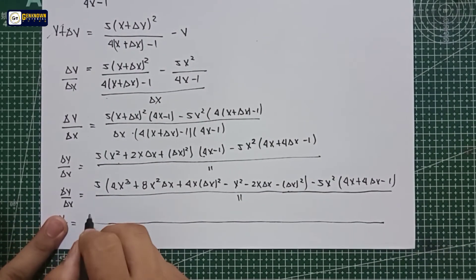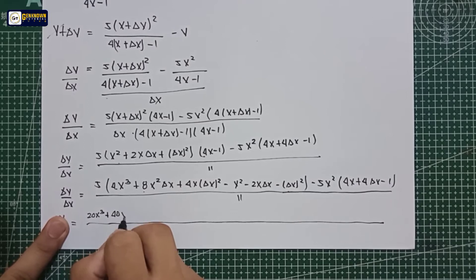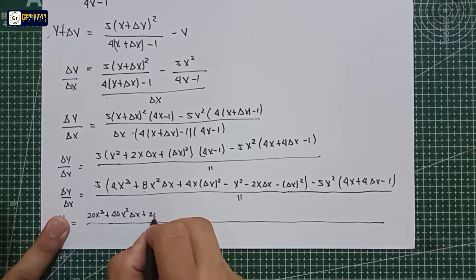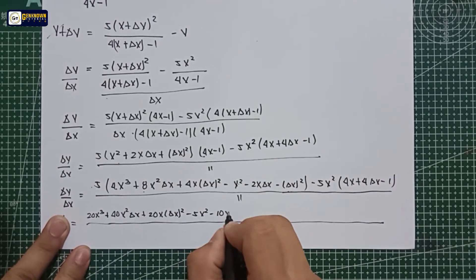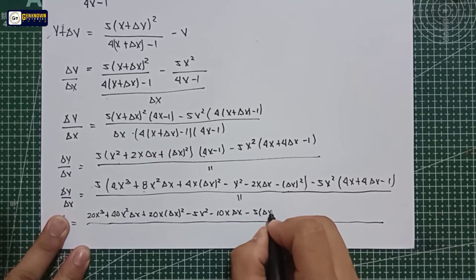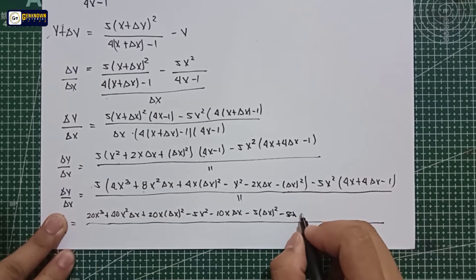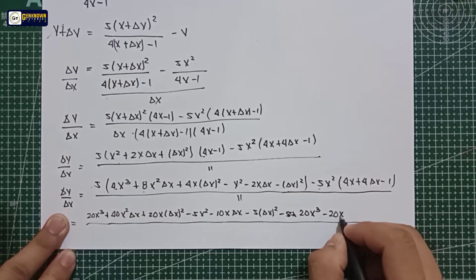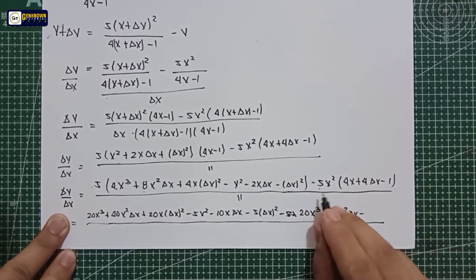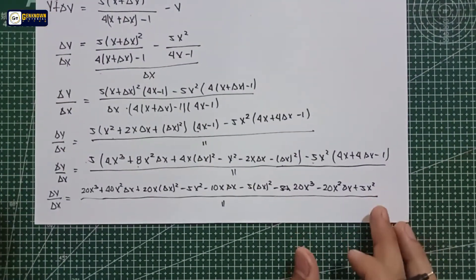After distributing the 5, we get 20x cubed plus 40x squared·delta x plus 20x·delta x squared, minus 5x squared minus 10x·delta x minus 5·delta x squared, minus — distributing 5x squared into (4x plus 4·delta x minus 1) — 20x cubed minus 5x squared plus 5x squared, all over the denominator. As you can see, we can cancel out 20x cubed and the 5x squared terms.